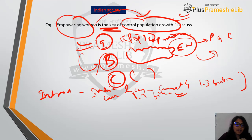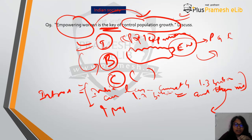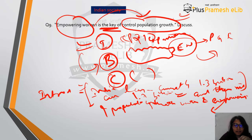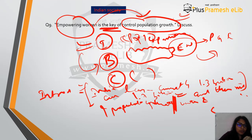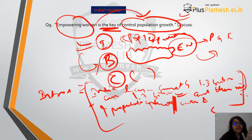After giving population context, connect the introduction to the body by writing 'and thus rises the need of population growth control.' You don't need to mention women empowerment in the introduction because then in the body you will have to repeat it. Just write how India is the most populous country, the current population, and then state that there arises a need for population growth control.